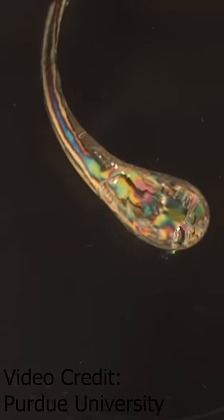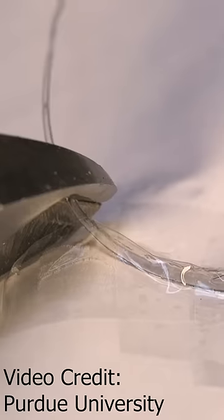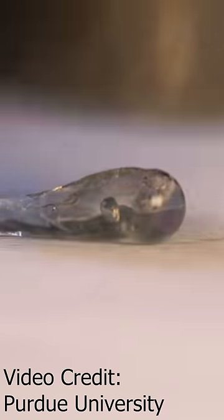Prince Rupert drops are normally made from dropping molten glass into water. This rapidly cools the outside and puts high stresses on the drop, so when you snip the tail it explodes, but the head of the drop is extremely strong and can withstand a hammer blow.